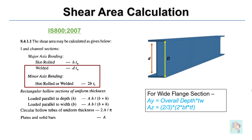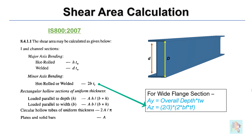Hence, the shear capacity value is not calculated as per the code. For shear area along the Y-axis, the difference is very small. But if we consider the shear area along the Z-axis, one-third area of the flange is not considered, which will reduce the shear capacity by a considerable amount. This will obviously affect the design results. I will come back to this later with more clarification.